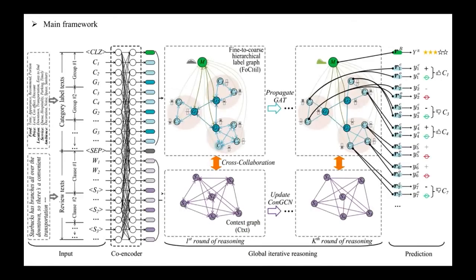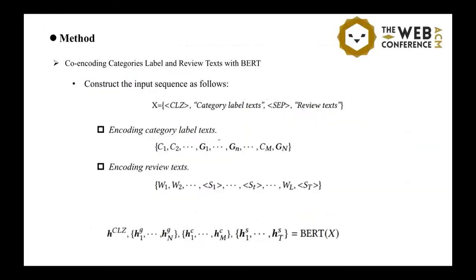So here is the overall framework. First of all, we take a pretrained language model BERT to encode the review documents. And then, we perform global iterative reasoning over two graphs. And finally, we make a prediction.